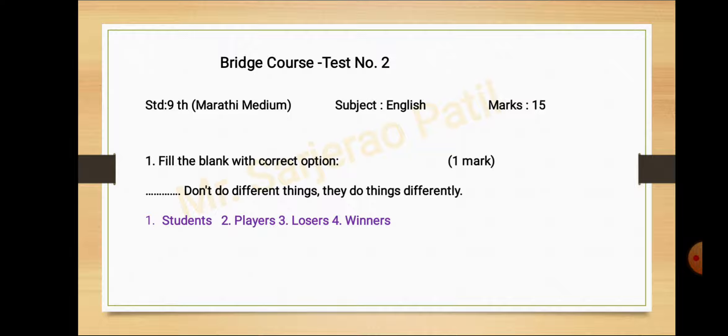Activity number first, fill the blank with correct option. Dash dash don't do different things, they do things differently. Options: first students, second players, third losers, fourth winners. Answer is option number second, players.